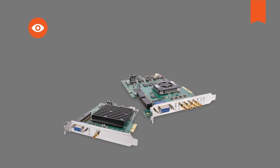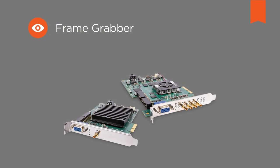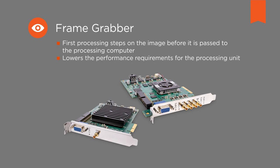In high-speed vision systems, the image is often received in the processing computer by special hardware cards, known as frame grabbers. They often perform the first processing steps on the image before the image is passed to the processing computer, which lowers the performance requirements for the processing unit. Alternatively, the complete processing can take place in the frame grabber — for example, image classification using a neural network. In this case, the frame grabber would forward the result of the image analysis to the processing computer along with the image.